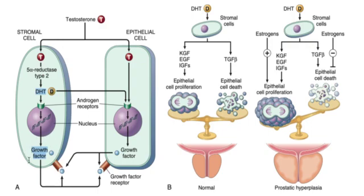Now let's look at what happens exactly with growth factors in the next image in this flowchart. When dihydrotestosterone acts on a stromal cell, it activates a few growth factors: epithelial-like growth factors, insulin-like growth factors, keratinocyte growth factors, and it also activates TGF-beta. In a normal person, there is a balance — it causes epithelial cell proliferation, while at the same time TGF-beta causes cell death. So there is a proper balance, and the prostate doesn't grow very big.